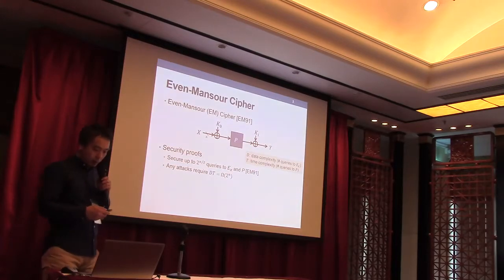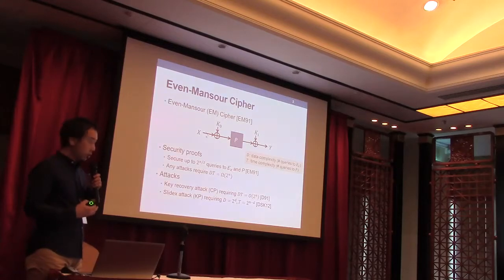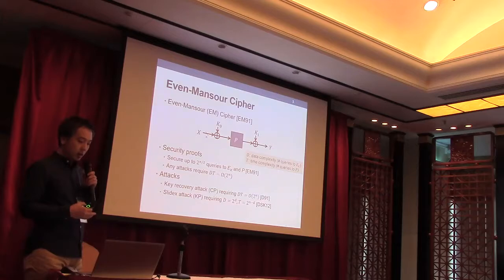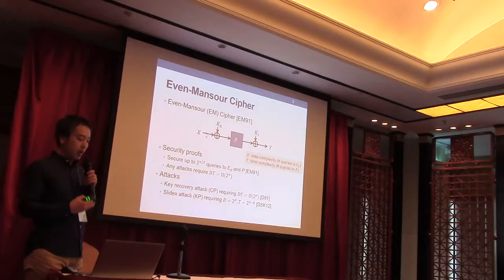After the proposal, Daemen showed a chosen plaintext attack matching the bound DT equals 2 to the n.